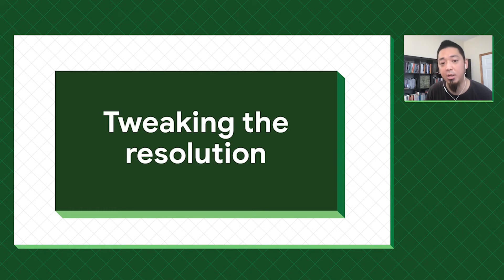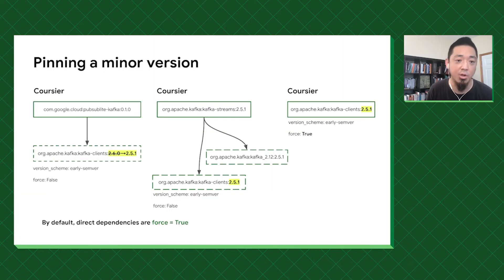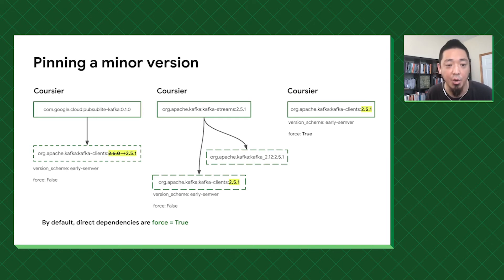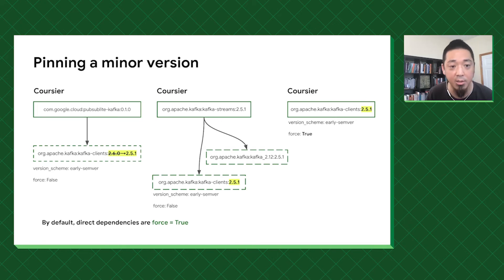To tweak the resolution, we have a whole bunch of different knobs. The first is pinning a minor version — closer to techniques used in the monoversioning world where you want to tightly control a particular version. Let's say we don't want eviction to happen and we do want to use Kafka 2.5: you promote the transitive dependency to Kafka 2.5. The direct dependency is by default given force equals true, so it will be pinned, and pubsub_lite_kafka would pick up Kafka 2.5 as its transitive dependency.